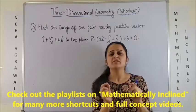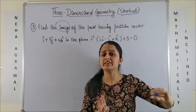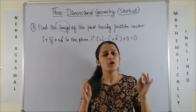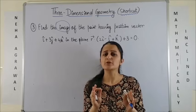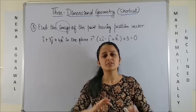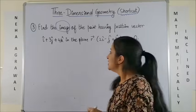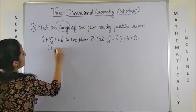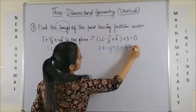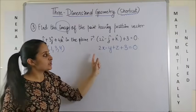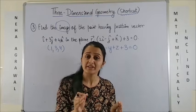Picking up one more example which is slightly different — find the image of the point, but this time you are given everything in vector form. Don't get hassled. All you need to do is put everything in Cartesian form and everything becomes super simple. This is also a tip in case you are giving your school exams: always convert to Cartesian form because it is much easier to tackle. So the point becomes (1, 3, 4) and the plane is 2x minus y plus z plus 3 equals 0.